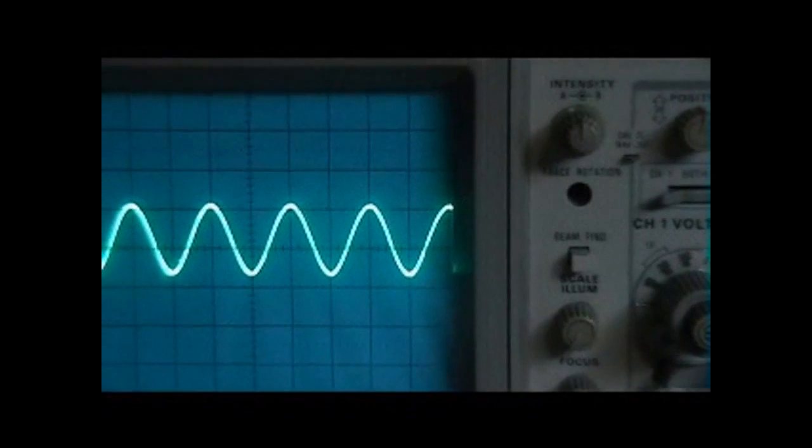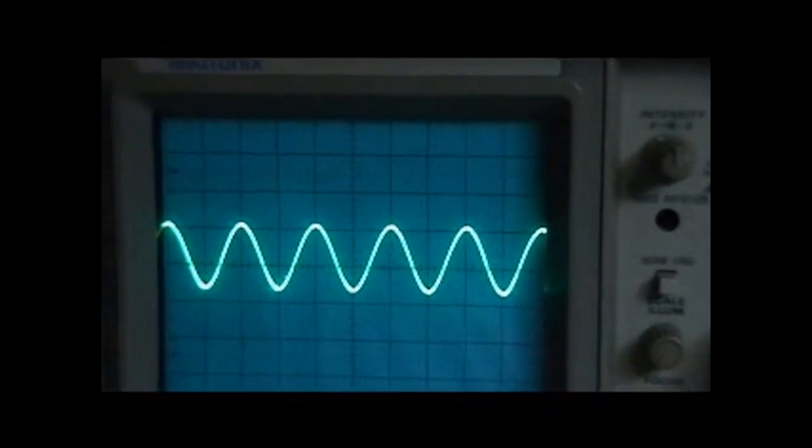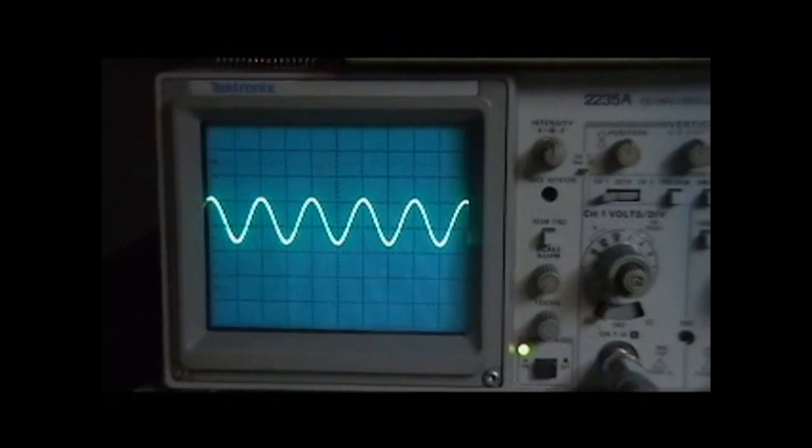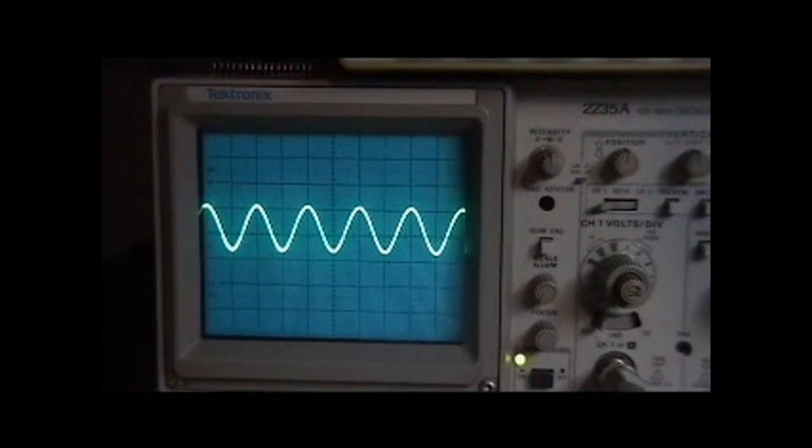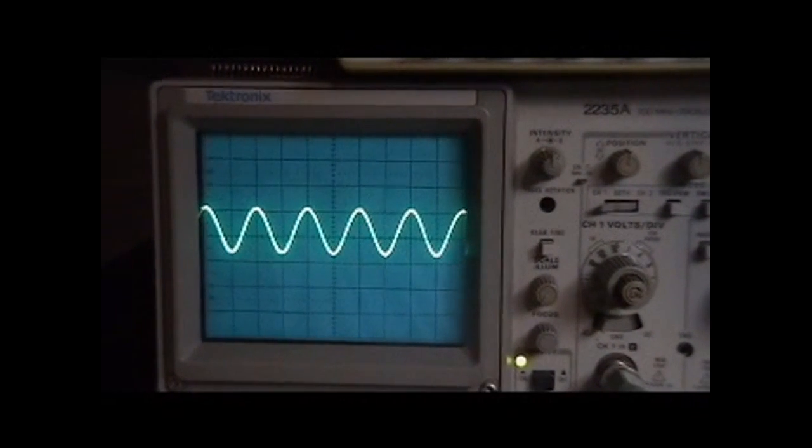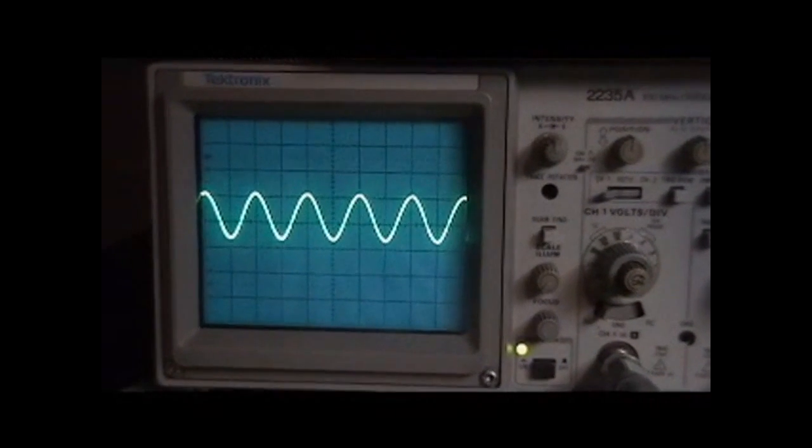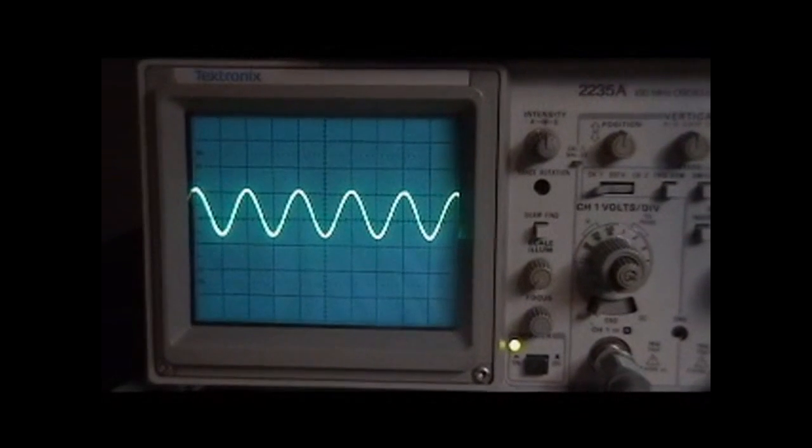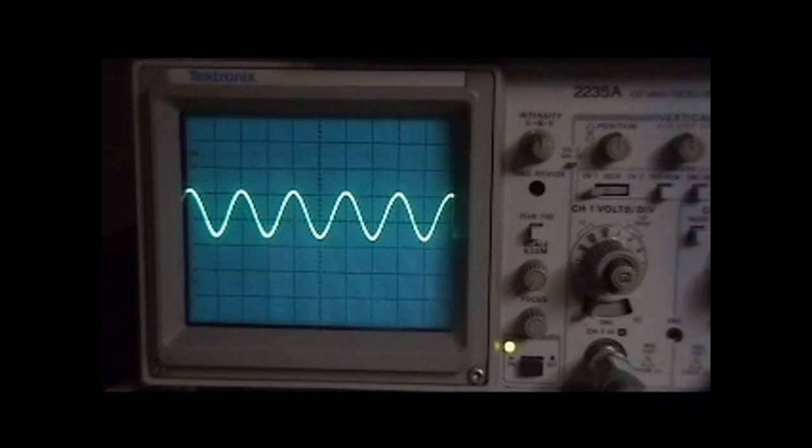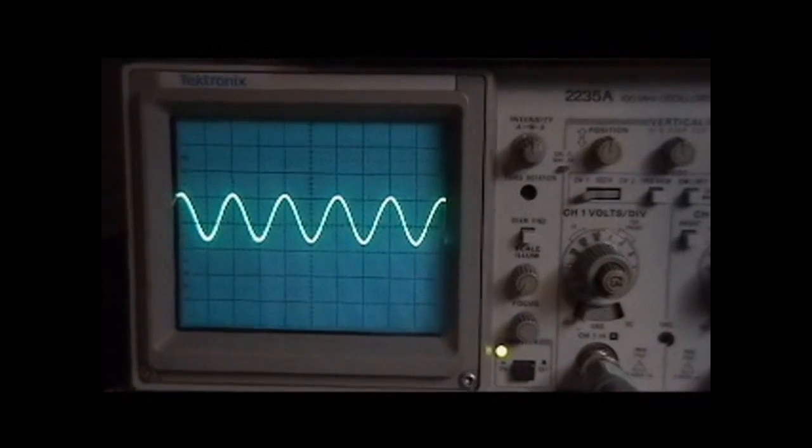Each of those divisions is roughly 20 millivolts. So what you've really got is about a 40 millivolt peak to peak sine wave going into the circuit.